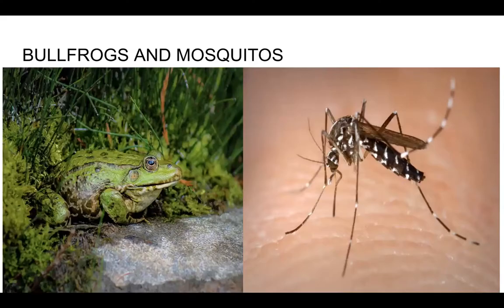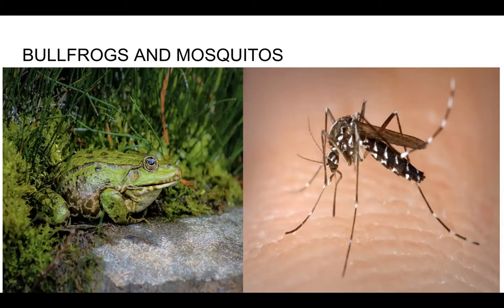Bullfrogs and mosquitoes can see infrared. Frogs are very versatile — bullfrogs have very good vision, including infrared vision, and eyes that can see above and below the water. The mosquito: this makes sense because when you normally get bitten, you're sitting in the backyard at nighttime in the dark, but the mosquito has no problem finding you. They can sense body heat and use the heat signature of the carbon dioxide you're breathing out to locate you.